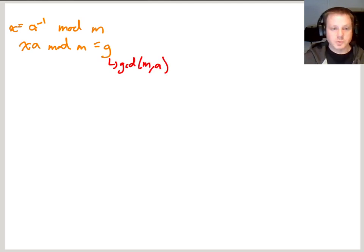Right? So if that gcd equals 1, then we find the modular inverse. Otherwise, we find something that might not be as useful as the modular inverse, but we can always find this x.